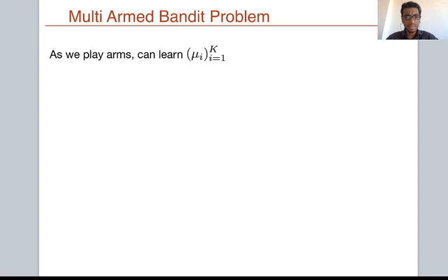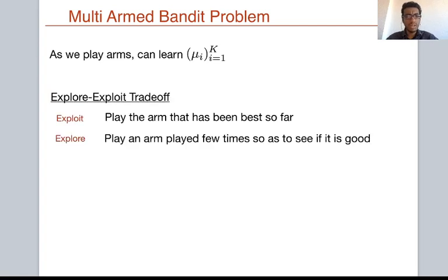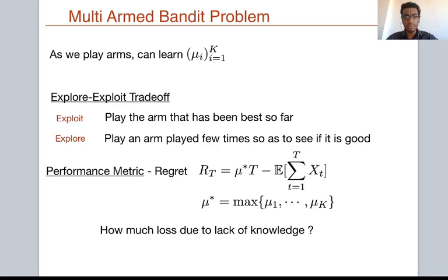However, as the agent plays the arms and collects samples, it can learn the arm parameters, and this captures the explore-exploit trade-off. An agent at each time could either play the arm that has shown the best promise so far or play another arm that has been played few times in the hope of discovering if it is the best. The classical way to measure performance is through regret, which is the difference between the expected rewards collected by the agent and that of an oracle who knows all true arm means and always plays the best arm. Regret quantifies how much loss is due to the lack of knowledge, thereby capturing the explore-exploit trade-off.